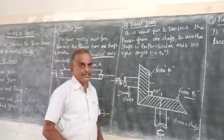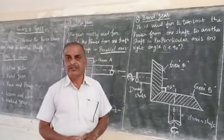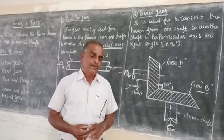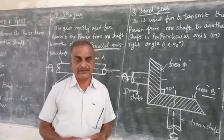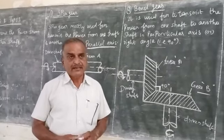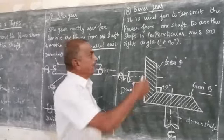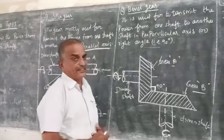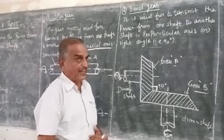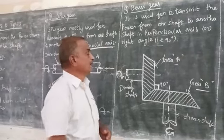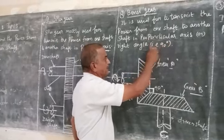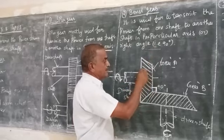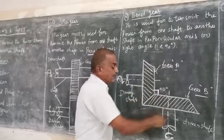The bevel gear is mainly used to transmit the power from one shaft to another shaft at a perpendicular axis — that is, at a right angle. At perpendicular angle, the gears are fixed on the other shaft and we use these bevel gear arrangements.